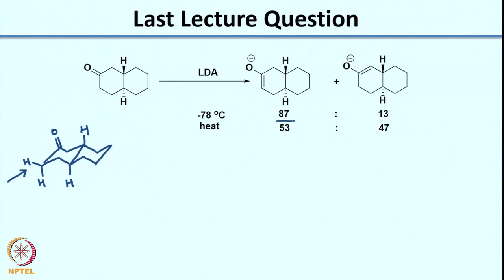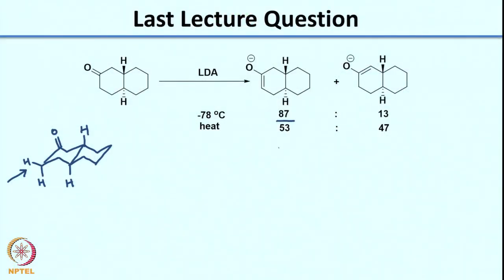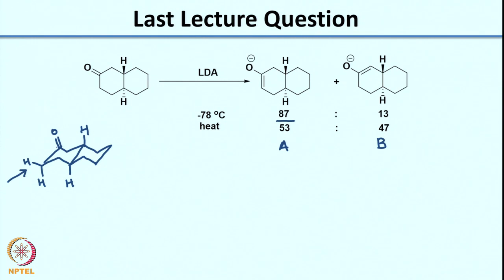Under thermodynamic control you let the reaction go to equilibrium. But in this case, if I compare both enolates - calling them enolate A and enolate B - the stability of both is almost comparable. So even when I heat this reaction, I do not see formation of one major enolate. What I see is almost a 50-50 mixture of both. So the kinetic control is lost and there is no thermodynamic control. This is an example where you can get kinetic control based on steric factors - specifically the axial orientation of those hydrogens.